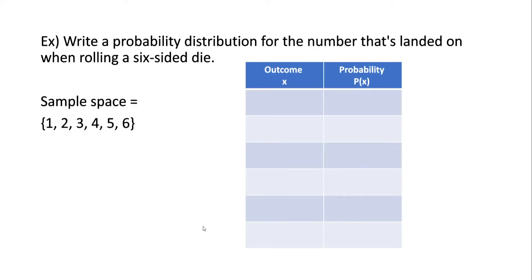Let's look at another example. Here we want to write a probability distribution for the number that's landed on when rolling a six-sided die. Our sample space has six possible outcomes: one, two, three, four, five, and six — the six faces of the die. Our outcome would be what number we land on, and the probability of each one should be one out of six.